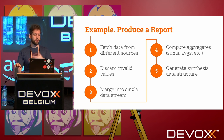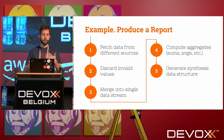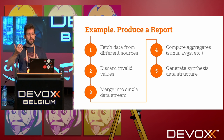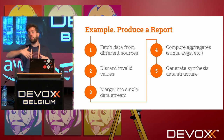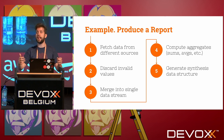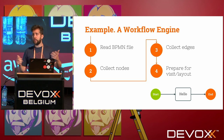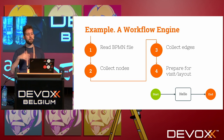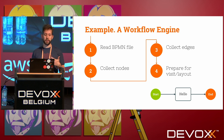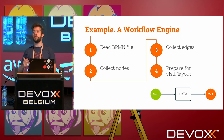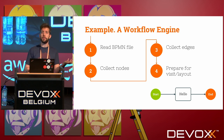Another example: data processing to produce reports. You fetch data from different sources, discard invalid values, merge into a single data stream, compute aggregates, construct a stats data structure, then render to PDF. For a workflow engine: you read a BPMN file, collect the nodes, collect the edges, and prepare for visiting or laying out.